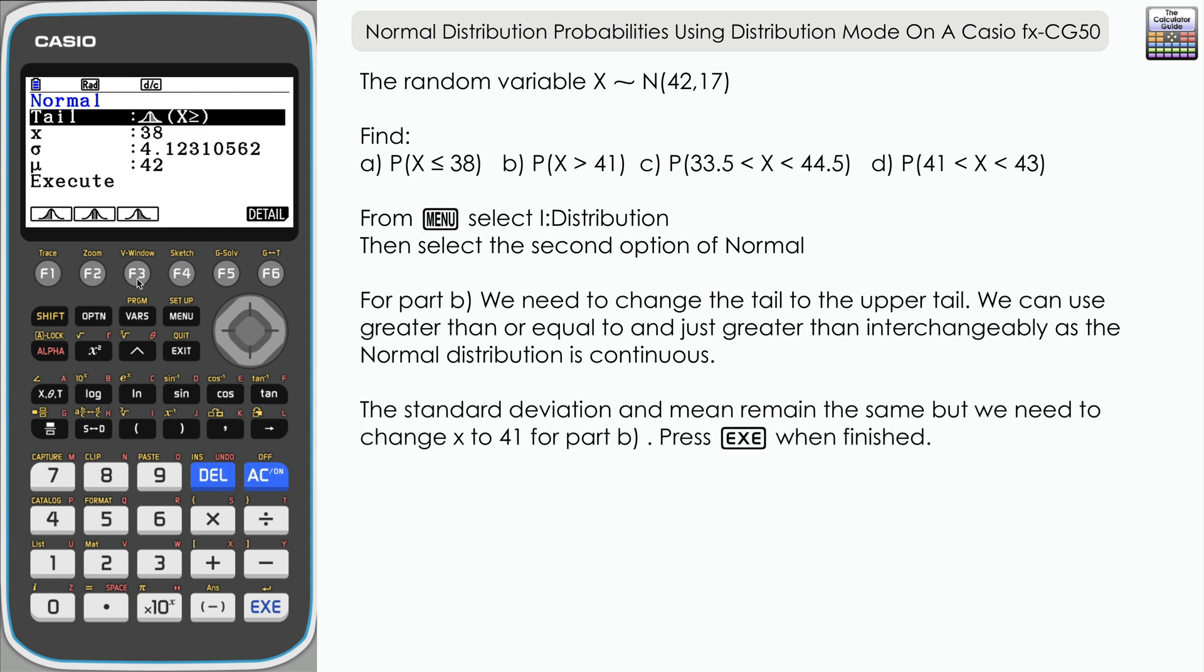The standard deviation and mean remain the same, so all we need to alter for part B is the X value, which is 41.